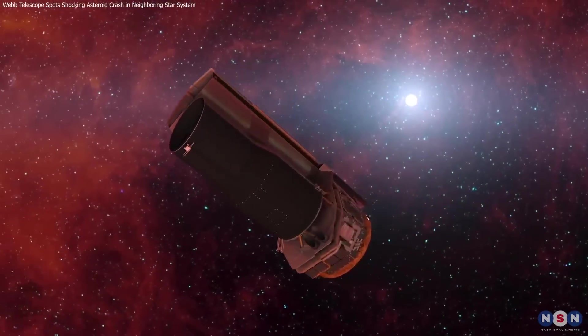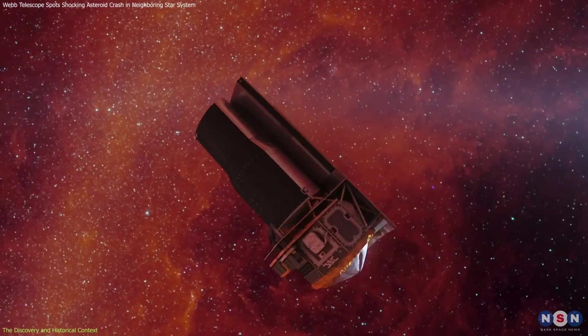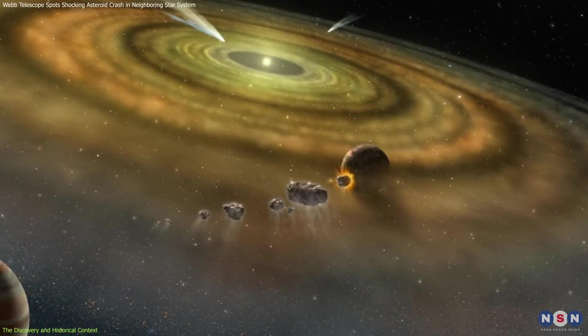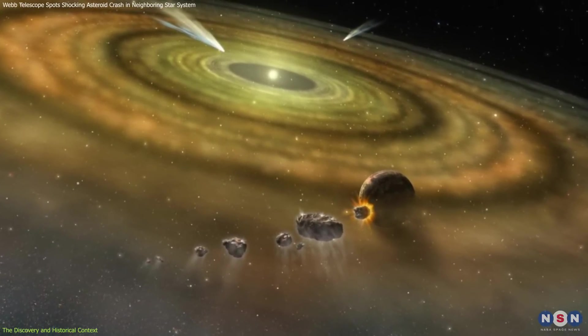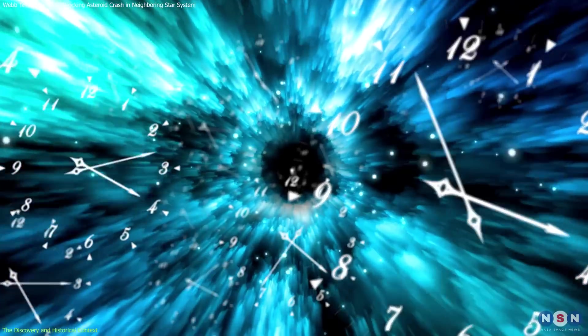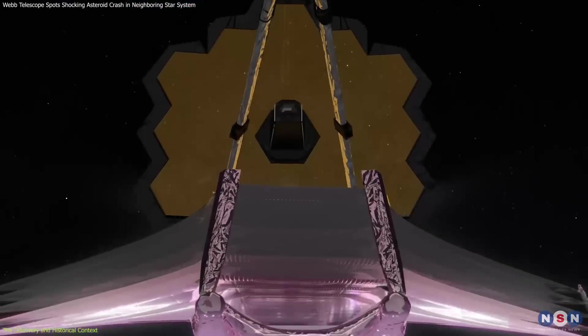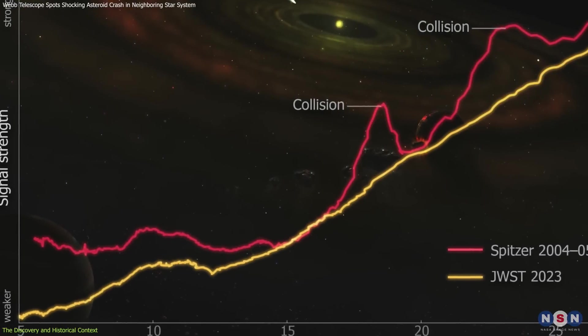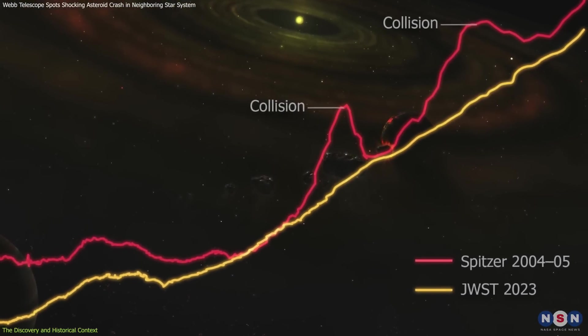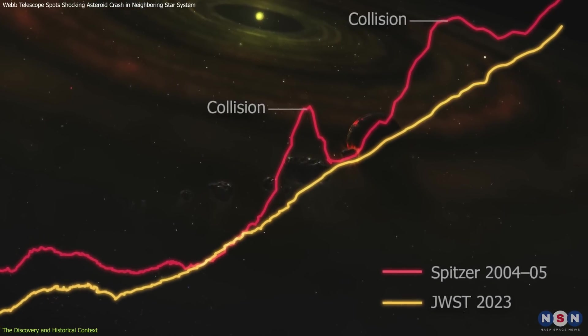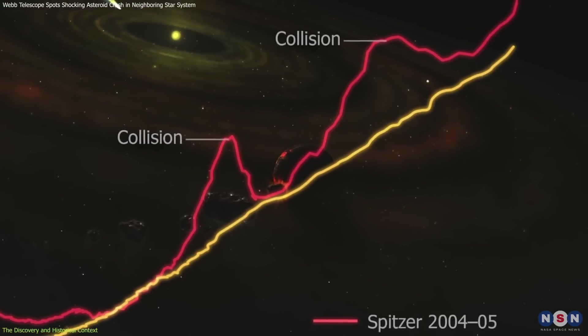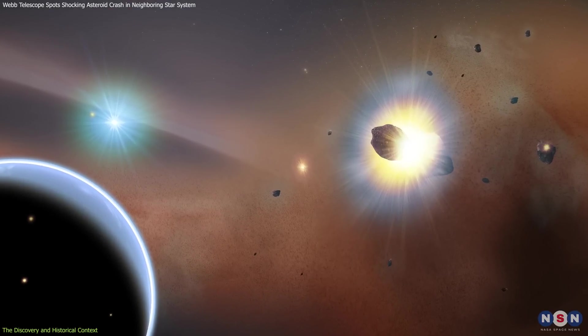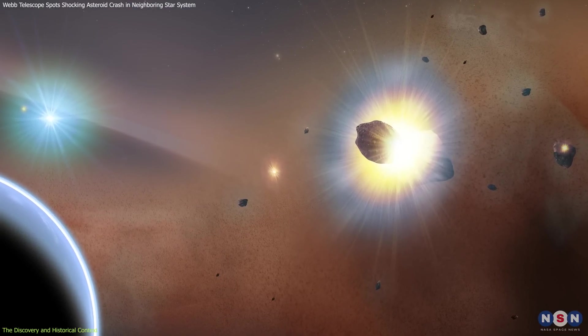In 2004 and 2005, the Spitzer Space Telescope captured images of the Beta Pictoris star system, revealing a substantial amount of dust around the star. Fast forward to 2024, the James Webb Space Telescope provided a new set of observations, showing that the dust had largely disappeared. This drastic change indicated a significant event had occurred, leading scientists to theorize a massive collision between giant asteroids.